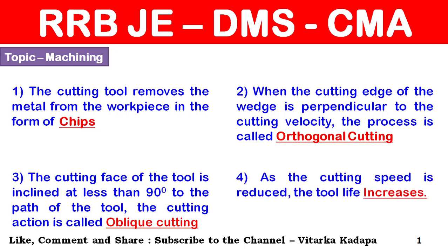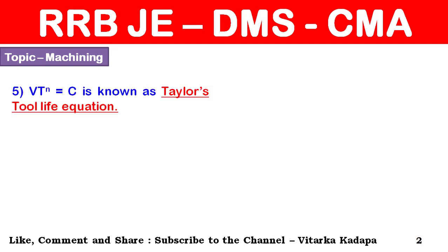As the cutting speed is reduced, the tool life increases. Vt^n = C is known as Taylor's tool life equation, where V is the cutting speed, T is the tool life, and C is the constant.